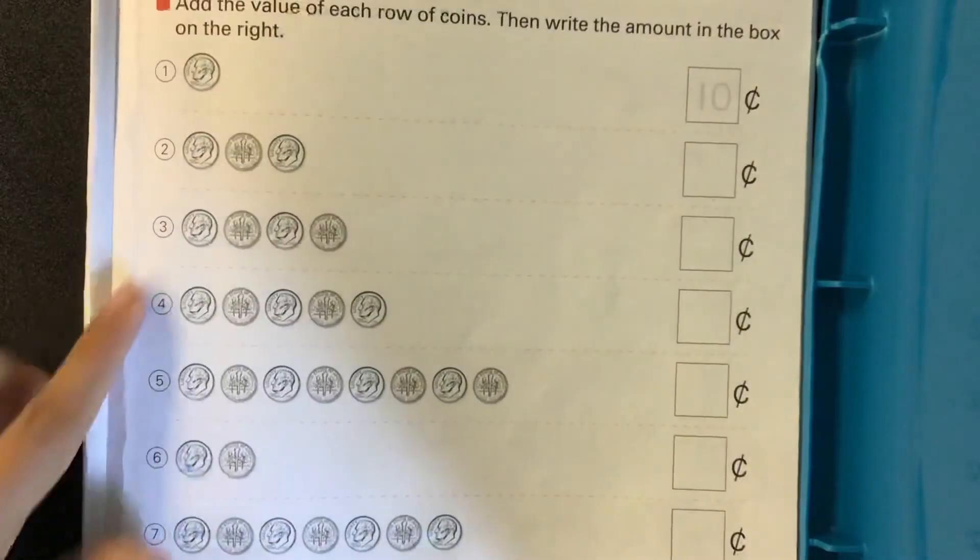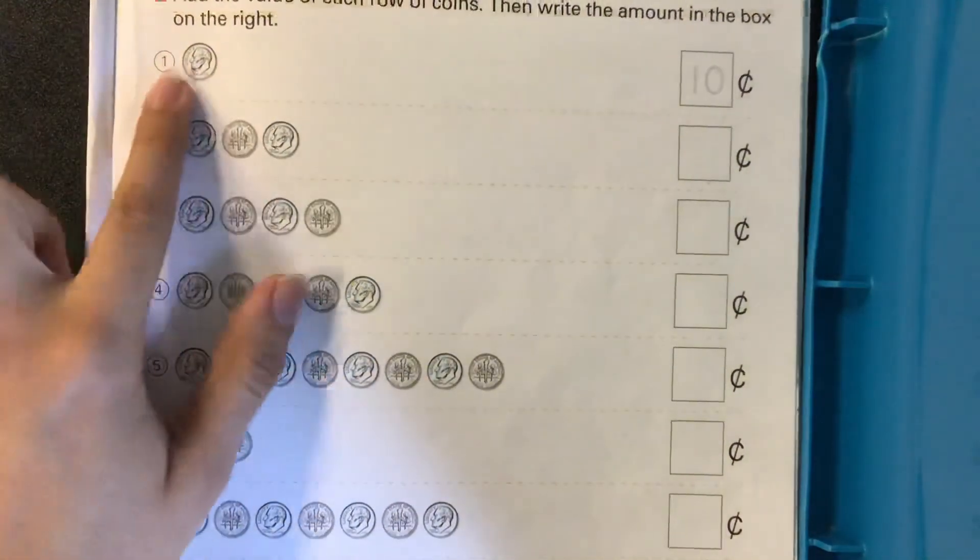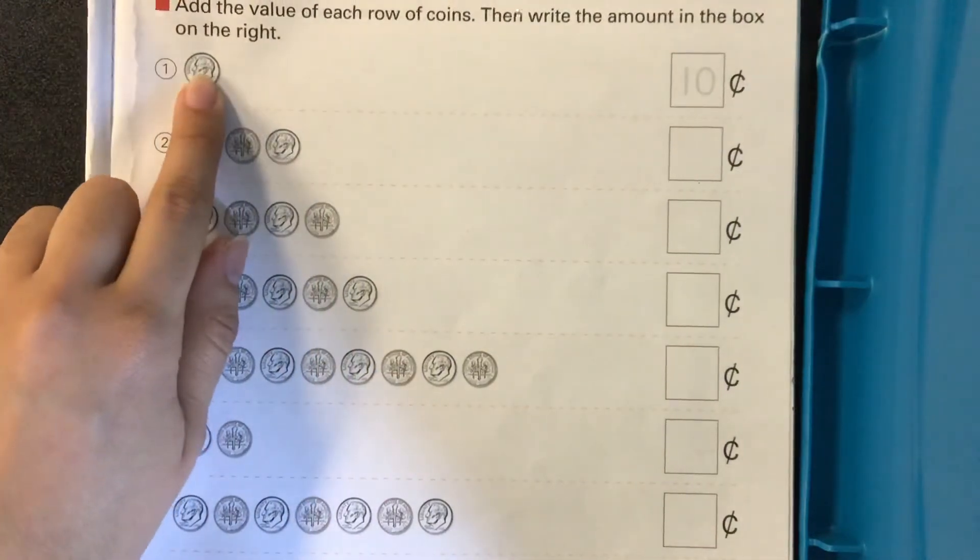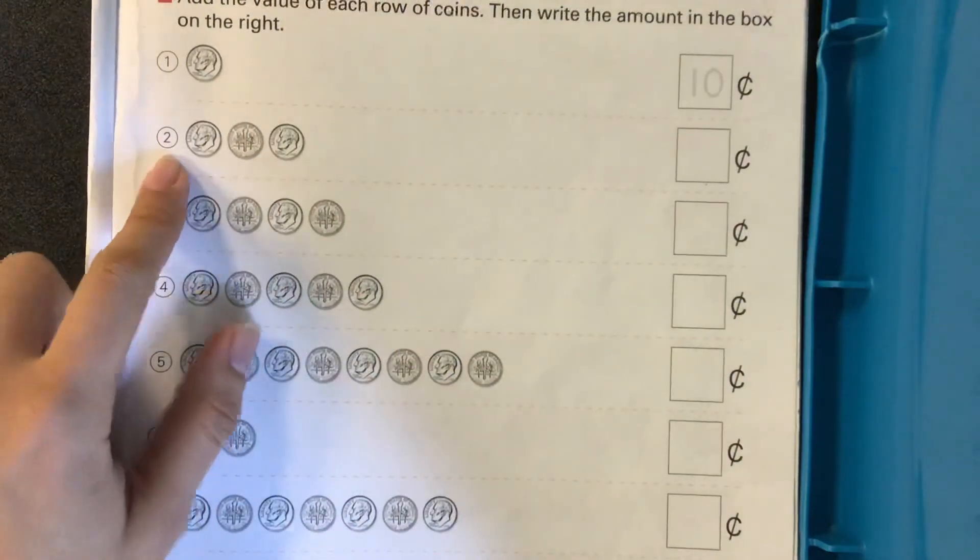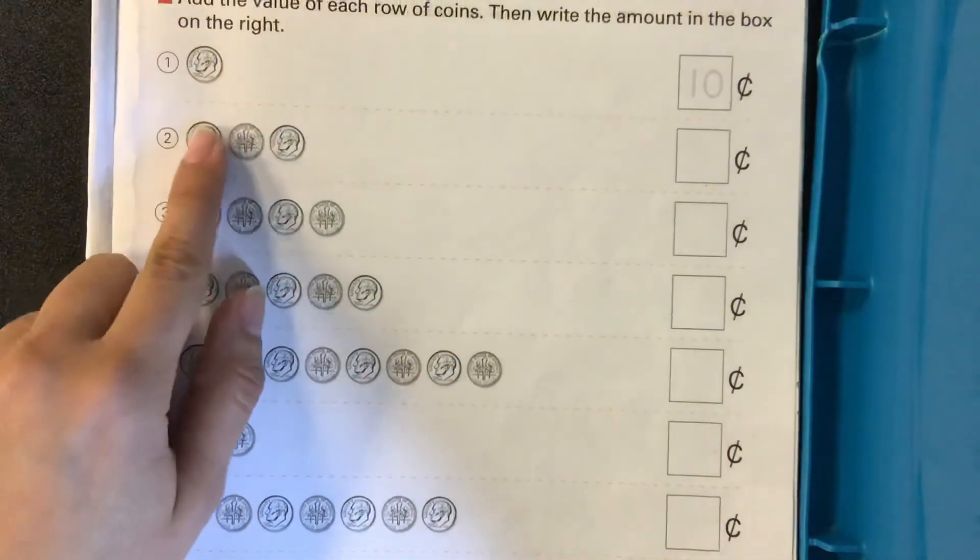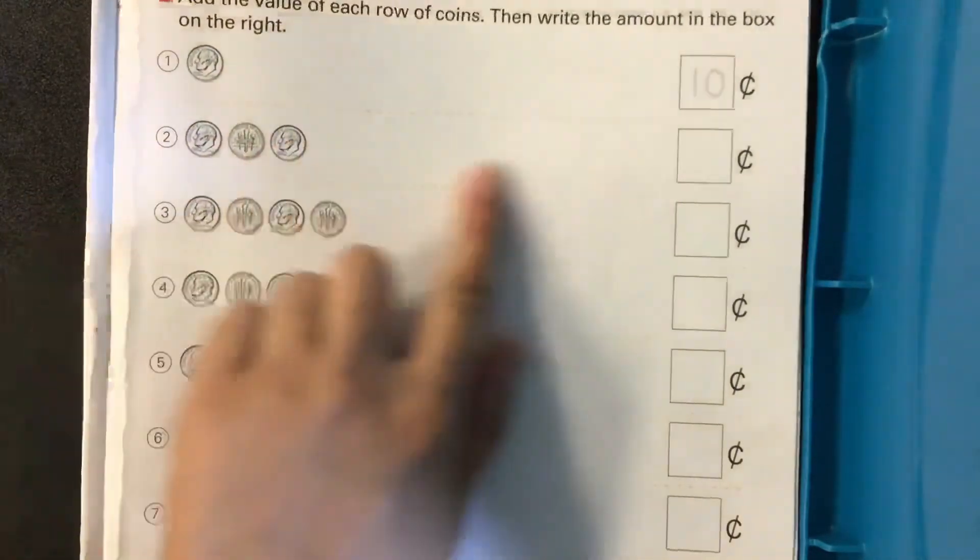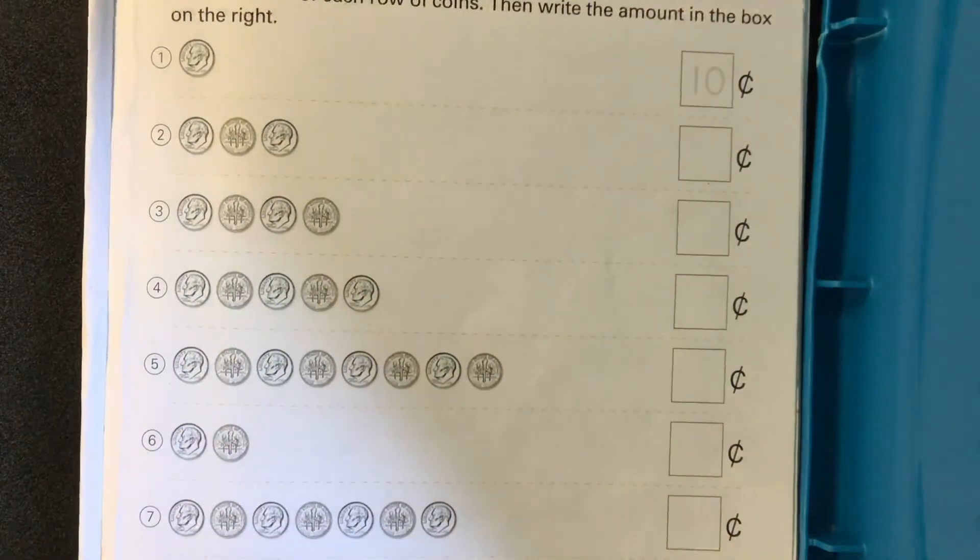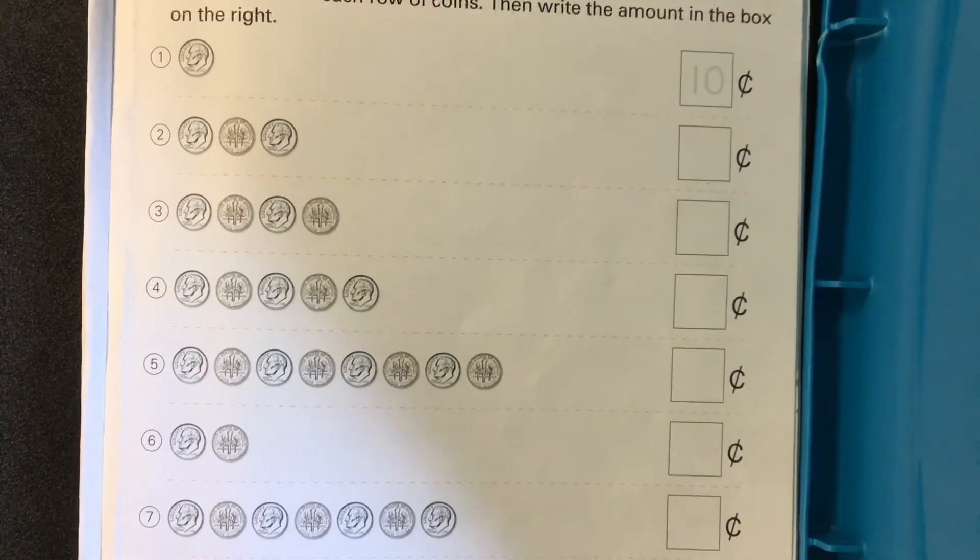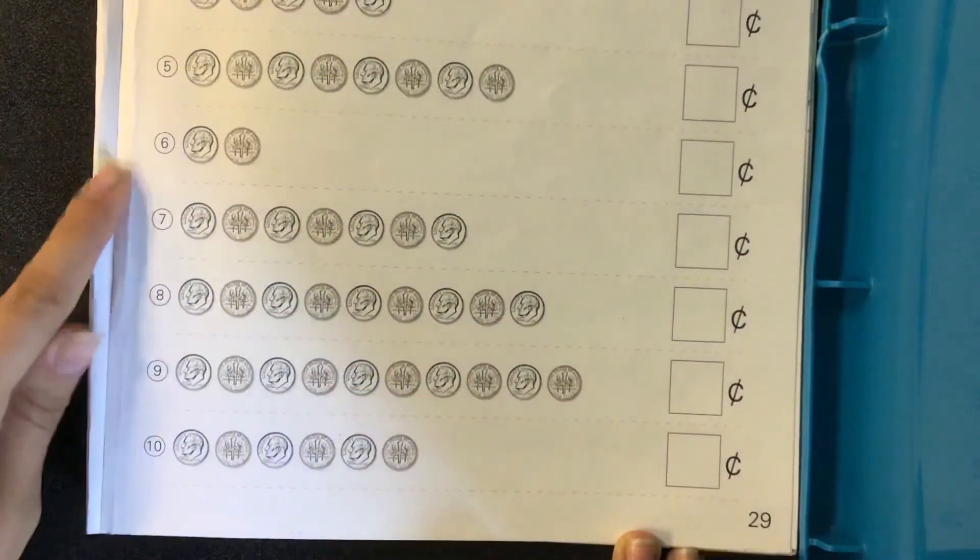And if you want some more, we have these right here that aren't in any particular order. So this would be really good practice. Remember, number one, there's one dime. So that's ten cents. Number two, we have three dimes. So that'd be ten plus ten plus ten, or skip counting: ten, twenty, thirty. And you would write the answer there. So here's one through seven that I want you guys to do at home. And you can pause the video. And then here's the rest, seven through ten.